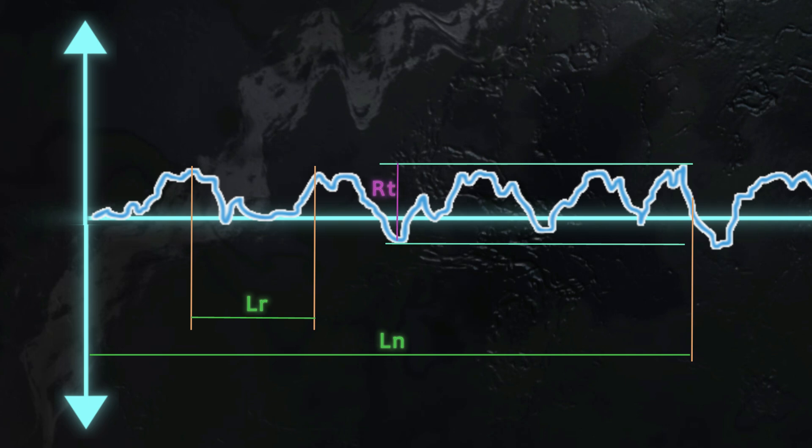But Rz is the distance between the lowest valley to the highest peak along a single evaluation length, Lr.